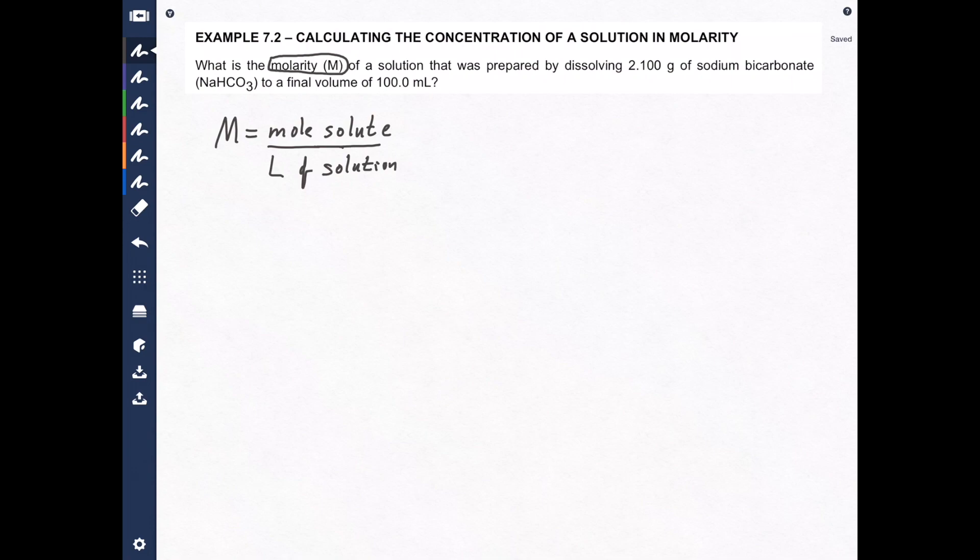What is prepared by dissolving 2.100 grams of sodium bicarbonate. That's probably going to be important because we know from the formula we have to calculate moles of solute. Here's the formula for sodium bicarbonate NaHCO3 that's going to be very important too to a final volume of 100.0 milliliters. So now we know the volume. The volume is given but it's not given in liters it's given in milliliters.